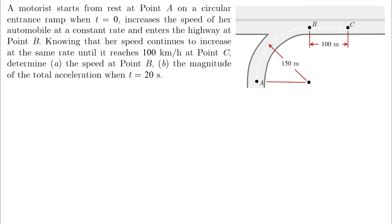A motorist starts from rest at point A on a circular entrance ramp when t equals zero, increases the speed of her automobile at a constant rate, and enters the highway at point B. Her speed continues to increase at the same rate until it reaches 100 km per hour at point C. Determine the speed at point B and the magnitude of the total acceleration when t equals 20 seconds.